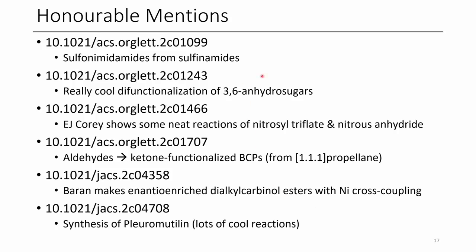There are some honorable mentions that didn't quite make the cutoff but are still worth reading: the conversion of sulfenamides into sulfonamidamides with potential drug applications; conversion of 3,6-anhydrous sugars into difunctionalized analogs; new chemistry from E.J. Corey on nitrosyl triflate and nitrous anhydride; conversion of aldehydes into BCPs using propylene; a Phil Baran paper on dialkyl carbonyl esters via nickel cross coupling; and a total synthesis of pleuromutilin. If you liked this episode, please leave a like and subscribe — I hope you have a great day.